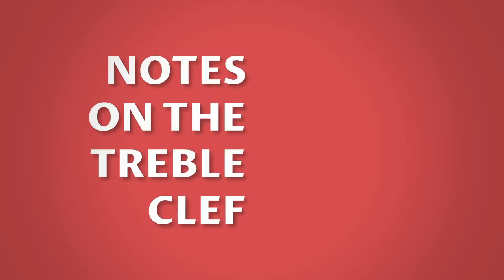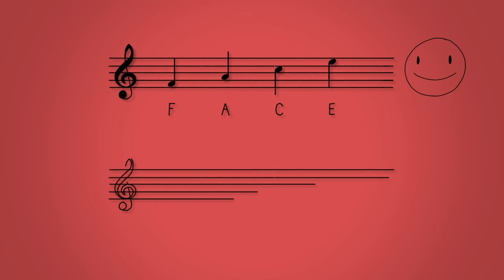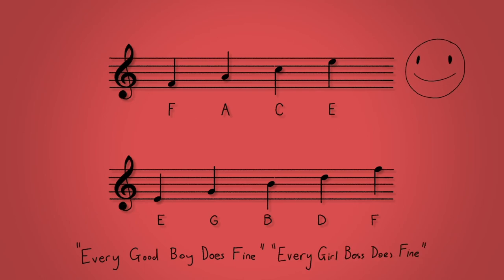The notes on the treble clef. To avoid counting up from middle C every time, we can use memory aids to recognize the notes. The four spaces on the treble clef spell out F-A-C-E or face. The five lines of the treble clef are E-G-B-D-F. The acronyms for these are usually pretty rubbish and we think it's much more fun to make up your own.